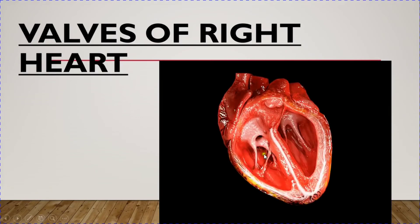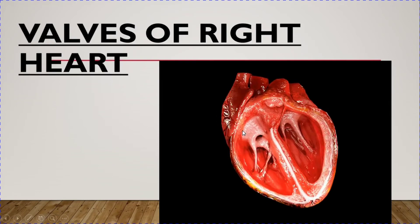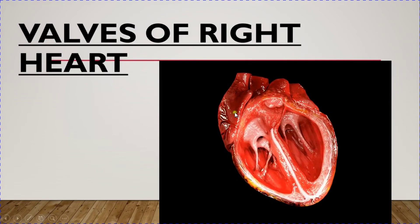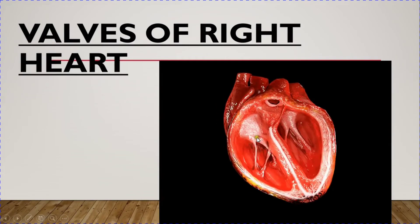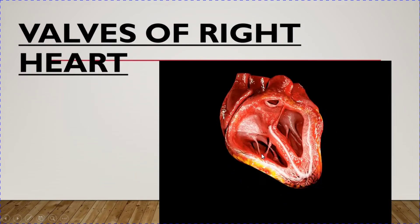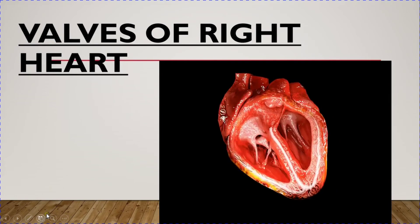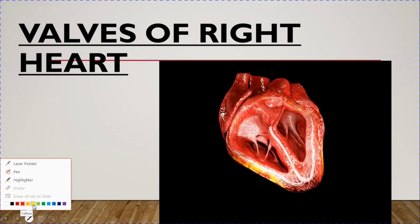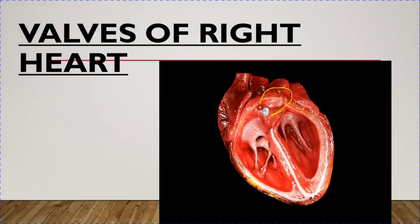The heart has two important valves. One is the atrioventricular valve, present between the right atrium and the right ventricle. This valve is called the tricuspid valve. Another valve is present at the region of the outflow tract of the right ventricle, and this is called the pulmonary valve.